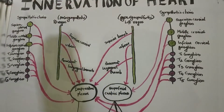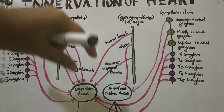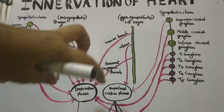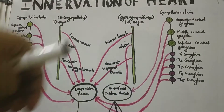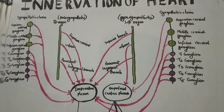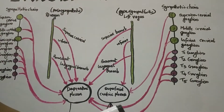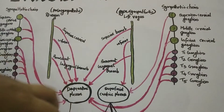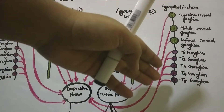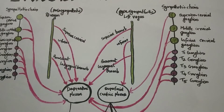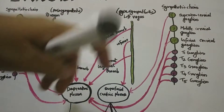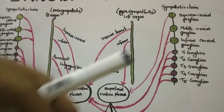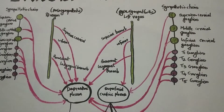The sympathetic and parasympathetic nerves together form plexus in the heart — plexus means networks. They form the deep cardiac plexus and also the superficial cardiac plexus. The superficial cardiac plexus is seen below the arch of aorta, in front of the right pulmonary artery. The deep cardiac plexus is seen behind the aorta, in front of the bifurcation of the trachea.